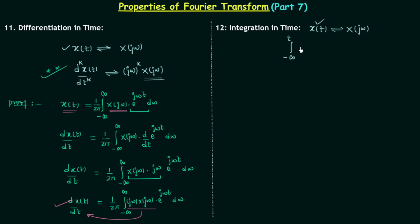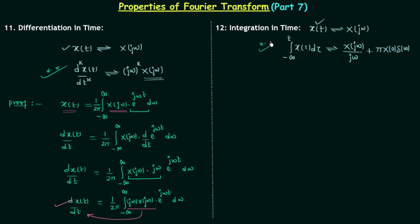I will write the signal as x(τ), replacing t by τ, where τ is a dummy variable to avoid confusion with the upper limit t. So we are integrating x(τ) dτ from minus infinity to t. After performing this integration, the Fourier transform — which was initially X(jω) — will get divided by jω and then added to π·X(0)·δ(ω). This is the integration in time property.